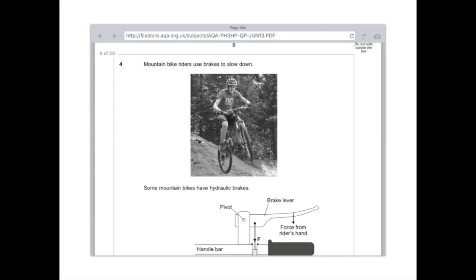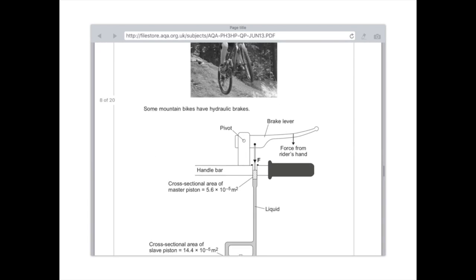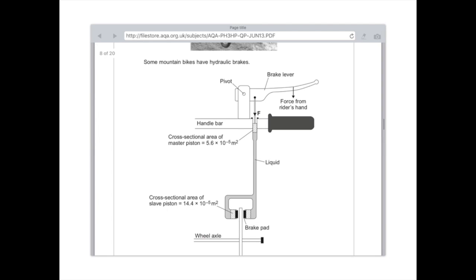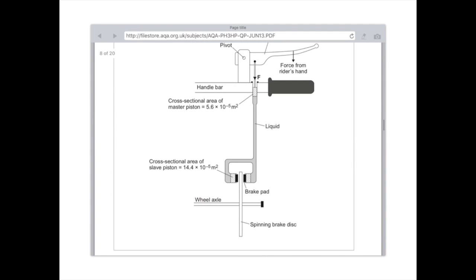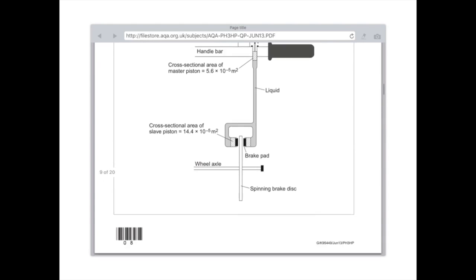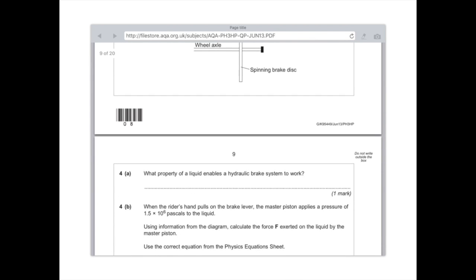Question 4. Mountain bike riders use brakes to slow down. Some mountain bikes have hydraulic brakes. Again, this question is really similar to the other ones. It's just the way they draw it makes it look really hard. But you just need to look for the two places where the pressure will be applied. And you can work it out based on that. So, we've got the handlebar and we've been told that the cross-sectional area of the master piston is 5.6 times 10 to the minus 5. And we've been given the cross-sectional area of the slave piston below, which is 14.4 times 10 to the minus 5.